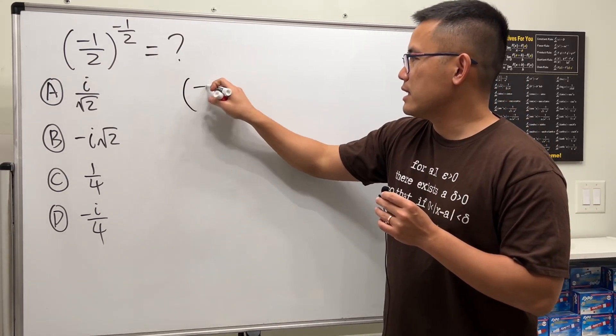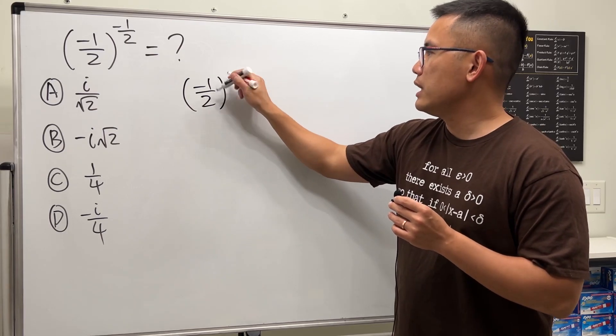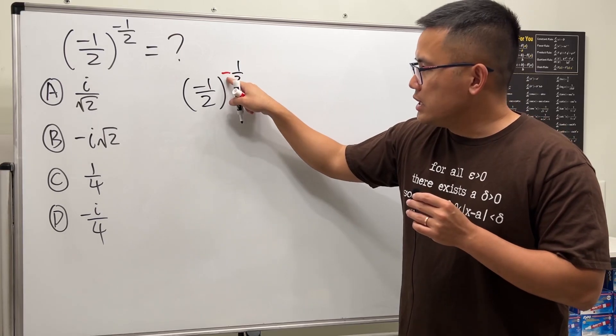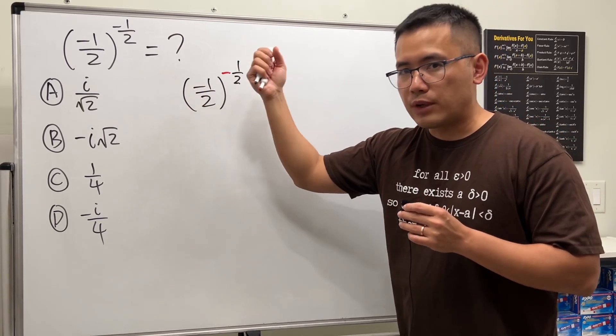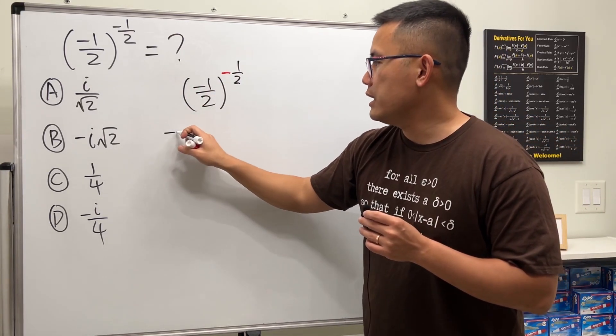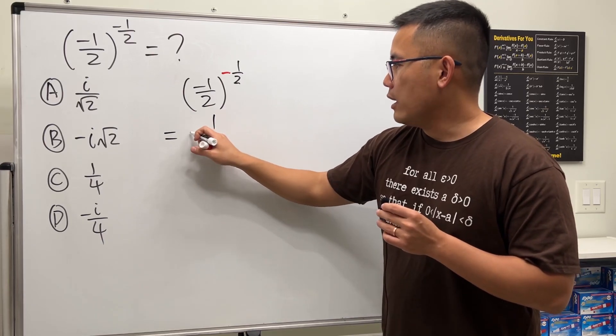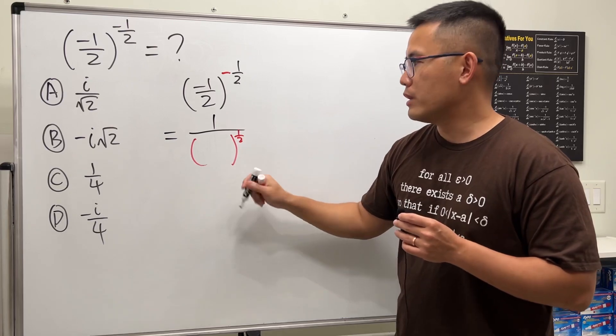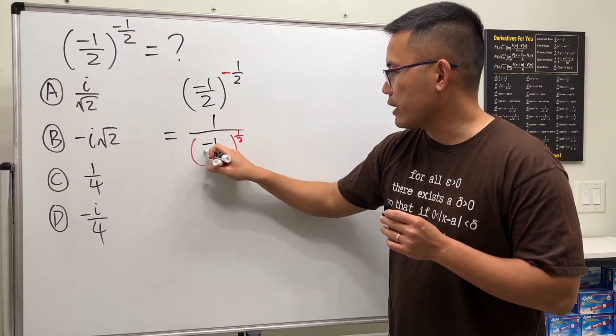Let me write this down again: negative one-half raised to the negative one-half power. This negative exponent we can just bring down to the bottom, so we are looking at this as one over negative one-half to the positive one-half power, and this is still the base which is negative one-half.